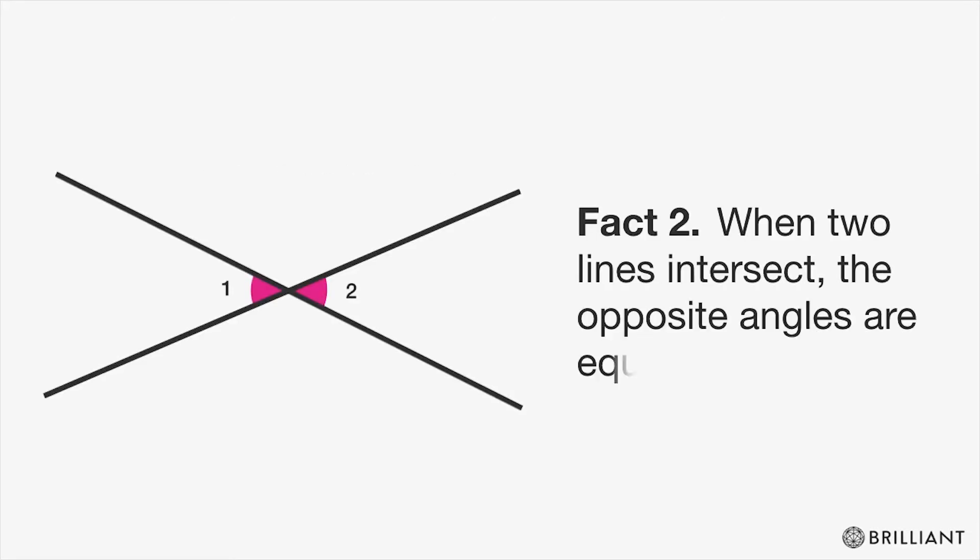Fact 2. When two lines intersect, the opposite angles are equal. Since angles 1 and x form a straight line, and angles 2 and x form a straight line, then angles 1 and 2 must be equal.